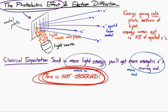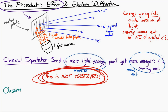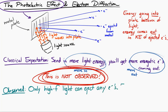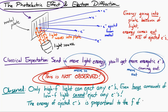What is actually observed is that only high-frequency light can eject the electrons. Even if you send in a huge amount of low-frequency light carrying a huge amount of energy, if it's low-frequency light, no electrons are ejected. Also, the energy of the ejected electrons is proportional to the frequency of the light, not the amount of energy that you send in.